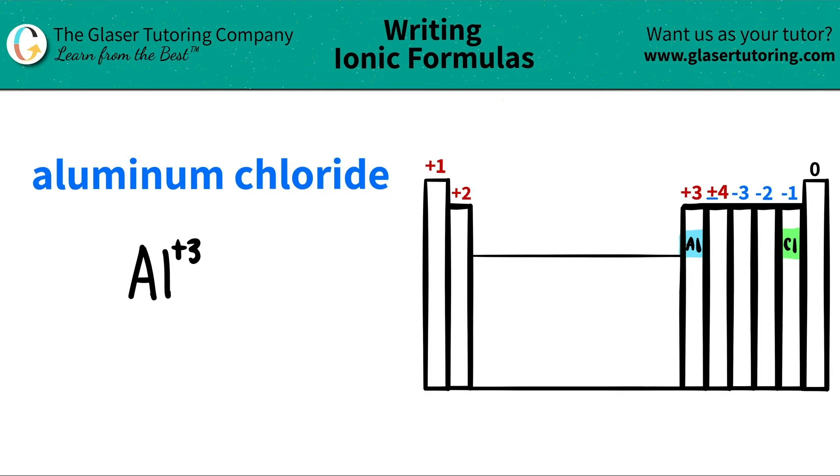Chlorine is represented by a Cl. And chlorine is a negative one charge. It's a halogen, right? And this group, they all share that common charge of being a negative one. So I'm going to write that Cl is a negative one.